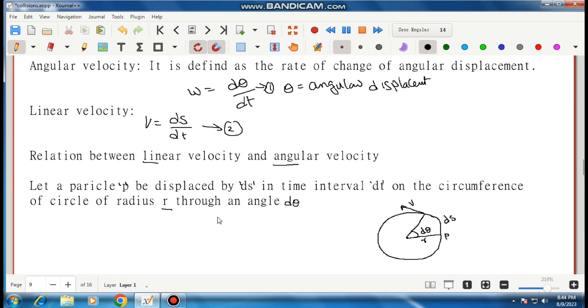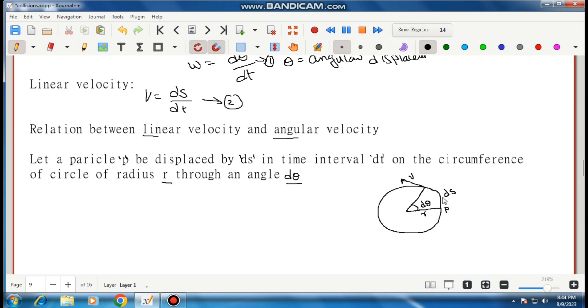of radius r through an angle d theta. Let us suppose this is a circle. The particle p is displaced ds along the circumference within time interval dt. The radius is r, the angular displacement